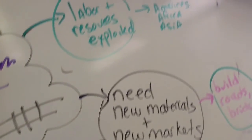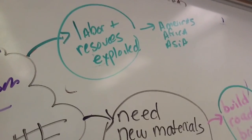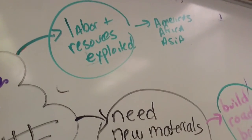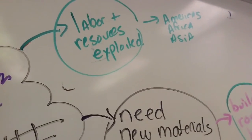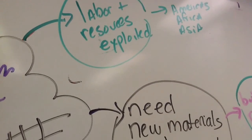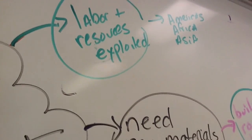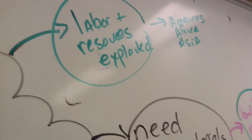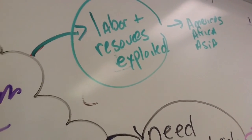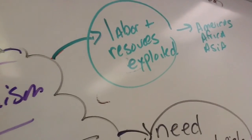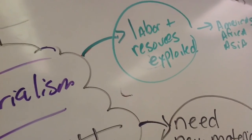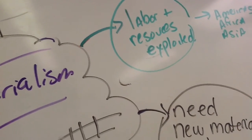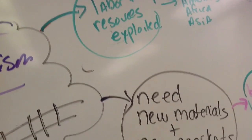Besides Africa, imperial powers were also expanding to other parts of the world — the Americas, specifically South America, and parts of Asia, specifically around India and Southeast Asia — where they exploited the resources and the labor of the people there.